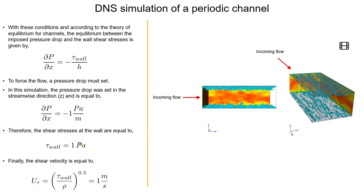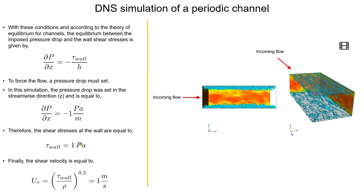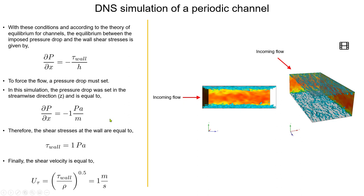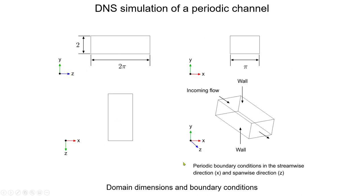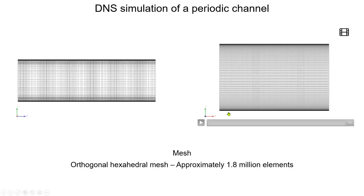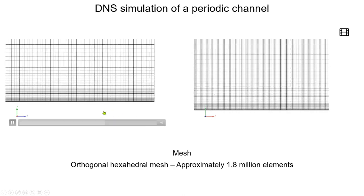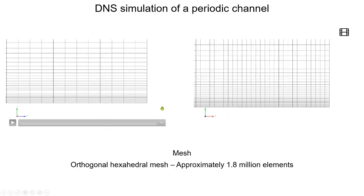The shear stresses at the wall should be one Pascal. When we run the case with the coarse mesh I'm going to give you, you will see that there is an error of about 10%. This is a very nice case because you can also see the influence of mesh resolution on your solution. If you refine the mesh to get something wall-resolving, those results will likely improve. These are our domain dimensions, and this is the fine mesh — not the one we're using.